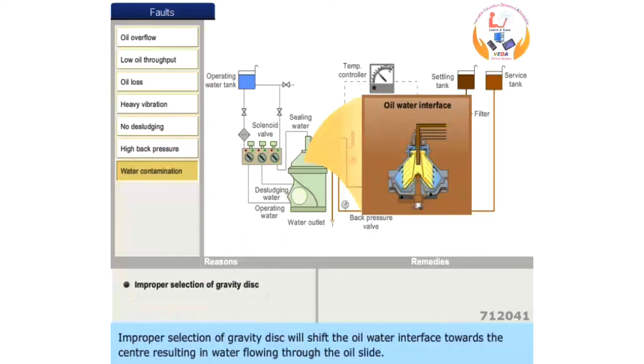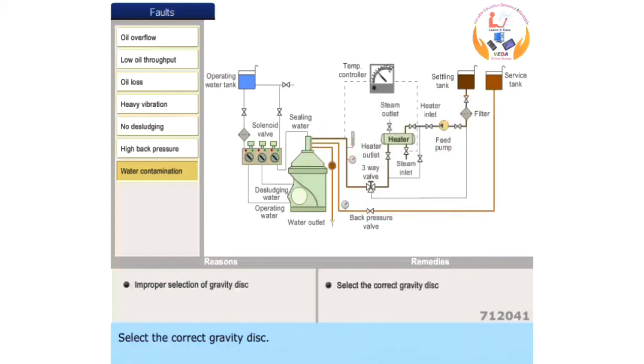Improper selection of gravity disk will shift the oil-water interface towards the center, resulting in water flowing through the oil slide. Select the correct gravity disk.